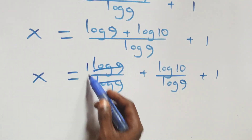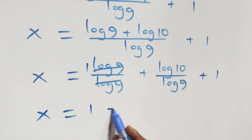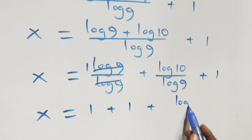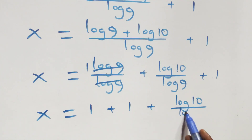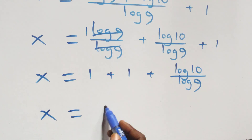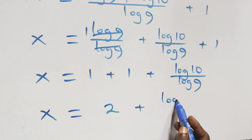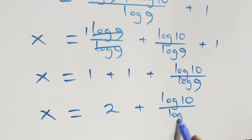Log 9 cancels each other, we have 1 left, which implies x equals to 1 plus 1 plus log 10 over log 9. That is x equals to 1 plus 1, that's 2, plus log 10 over log 9.